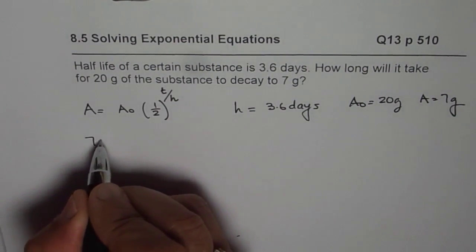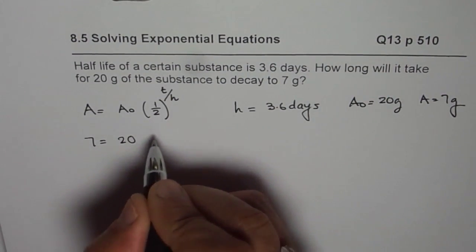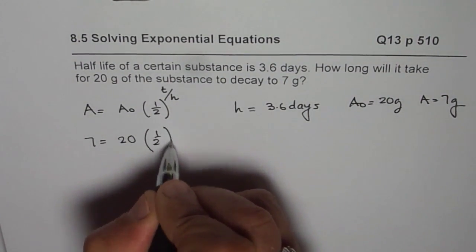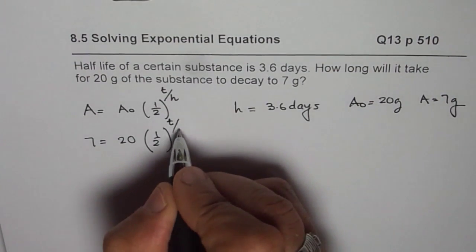So 7 equals A0 is 20, and we have half to the power of t over 3.6.